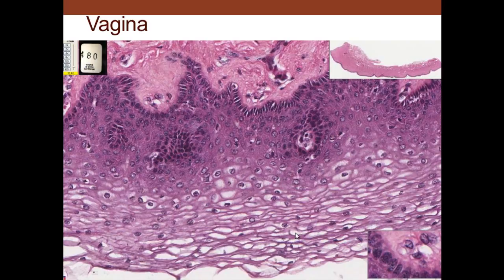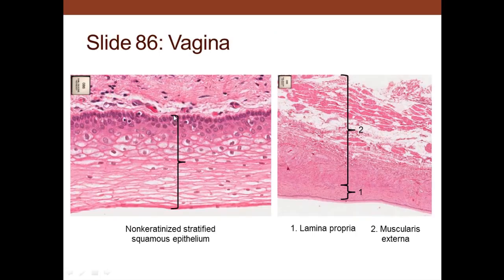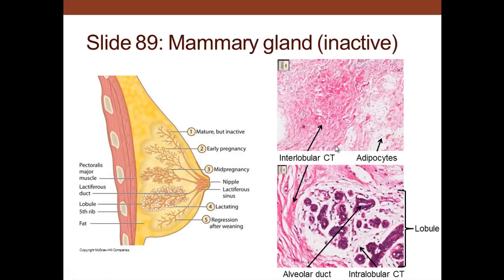Here we can see the basal layer, the spinosum layer, and then the stratum corneum layer, but it's not keratinized — you just have flattened cells, some of which still have nuclei on the surface. We see simple columnar epithelium cells — the mucous glands of the endocervix — and then on the outer side, non-keratinized stratified squamous epithelium of the vagina, along with the lamina propria and the muscularis layer. Now if we look at the mammary gland, we can see this inactive slide.